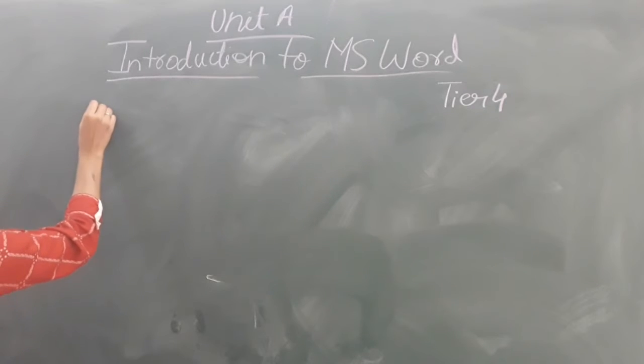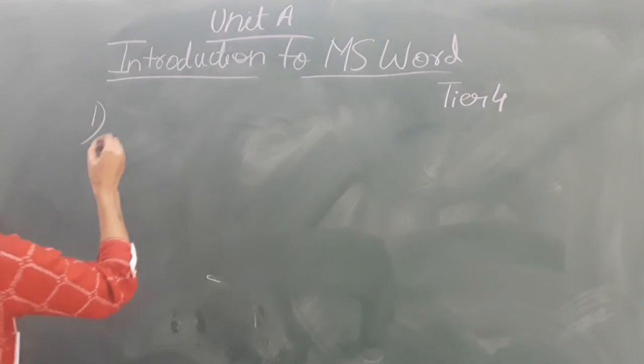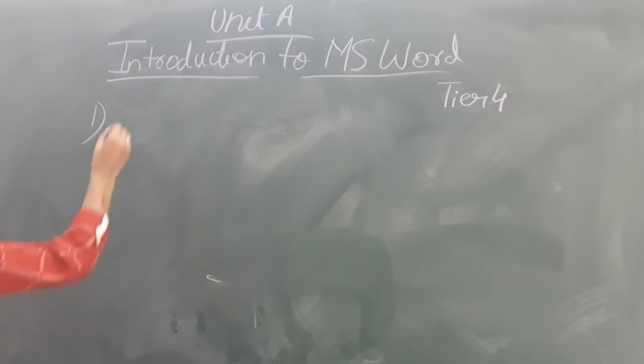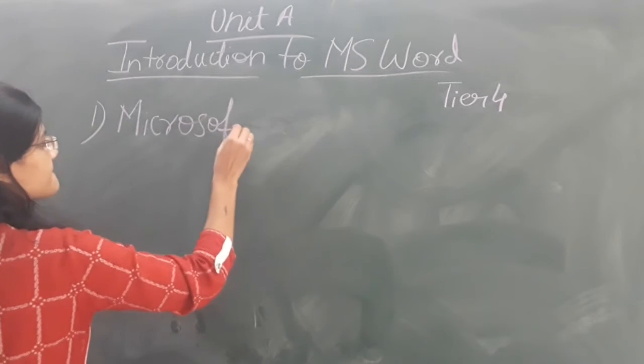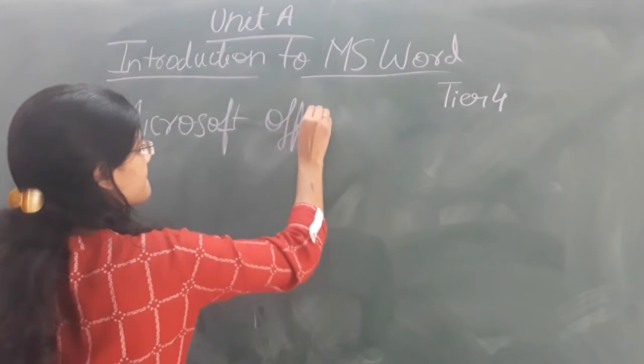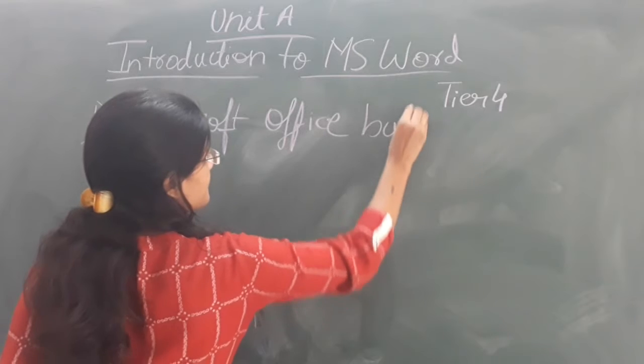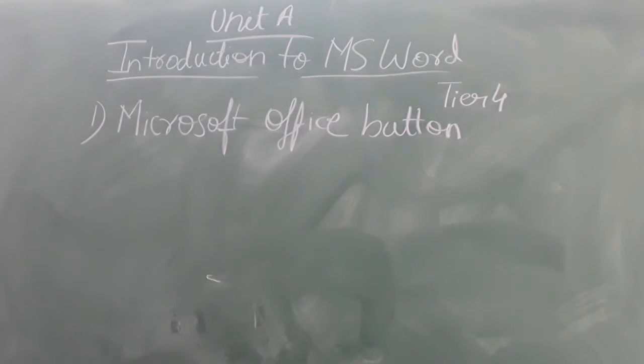So in the last class we have studied different items that we have to, when we open the MS Word screen we can see many items. The first one is Microsoft Office Button. So Microsoft Office Button is that which replaces the old file menu. Means whatever the option of file menu was containing, nowadays these Office Button contains those options such as open, save, save as, file, next, anything, whatever the file menu was containing.